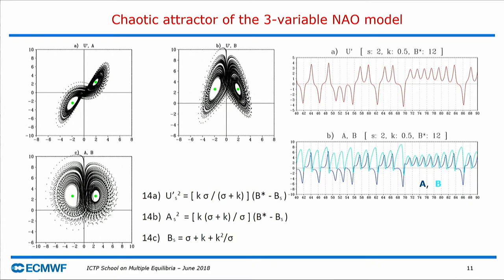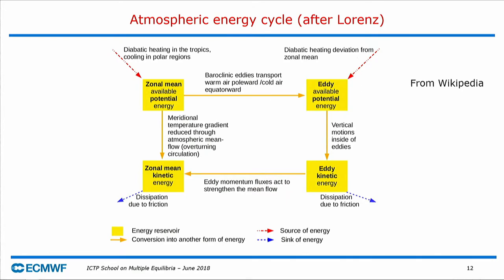If you think about the traditional view of the atmospheric energy cycle, the energy transformations are mainly driven by baroclinic eddies — there are no stationary waves in this scheme, even though planetary waves transport heat and convert energy. The traditional view: diabatic heating creates zonal mean available potential energy, which is turned into eddy potential energy; baroclinic eddies then convert eddy potential energy into eddy kinetic energy, which is then transformed back into kinetic energy of the zonal mean flow.